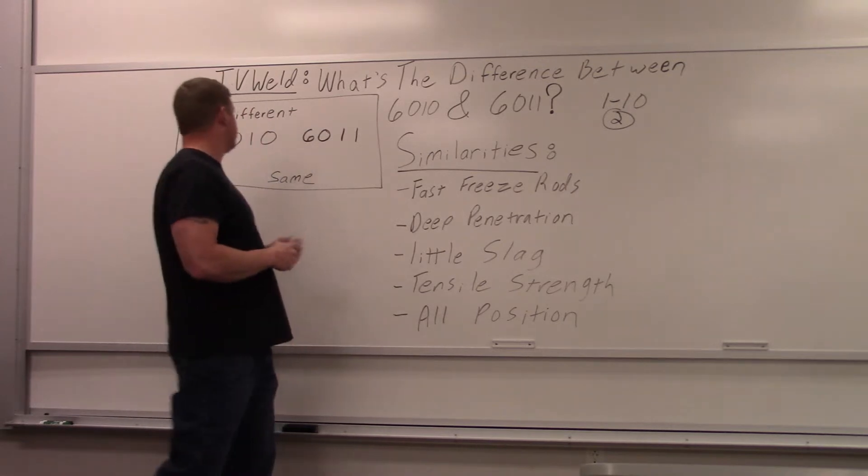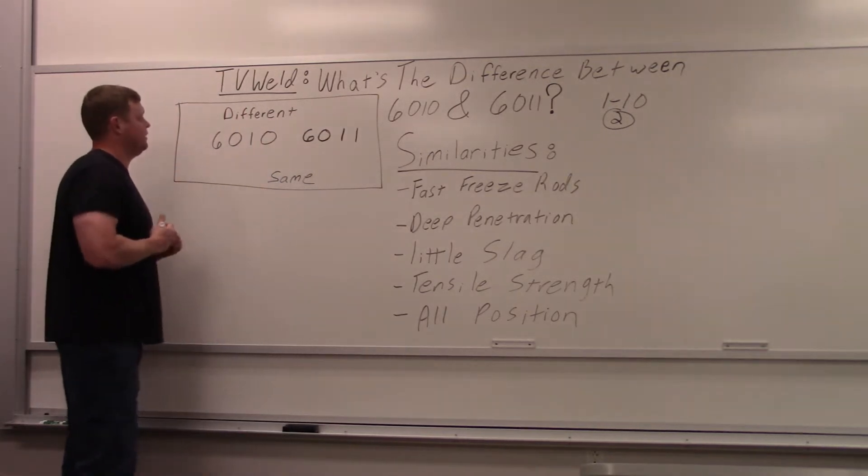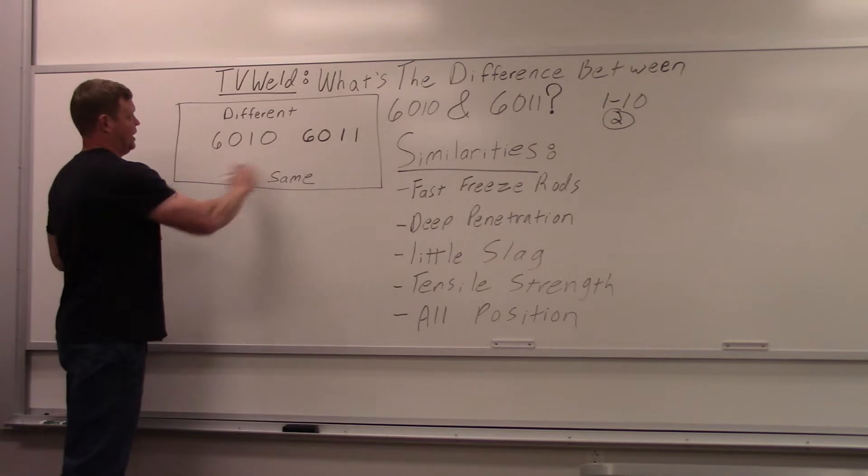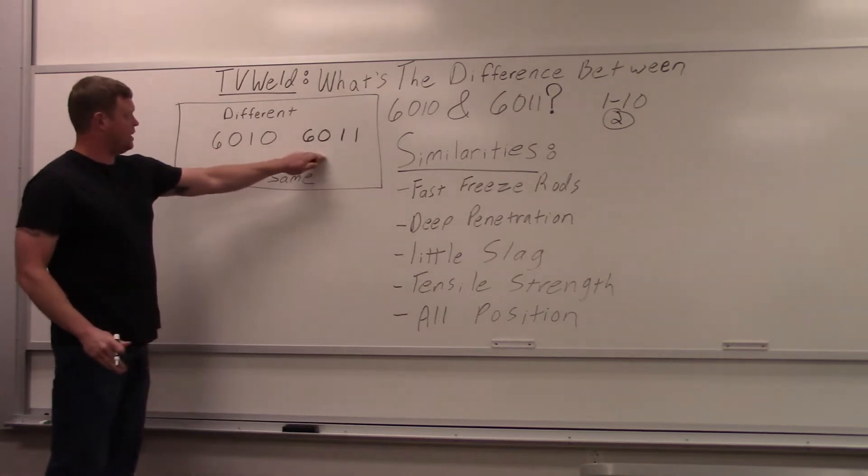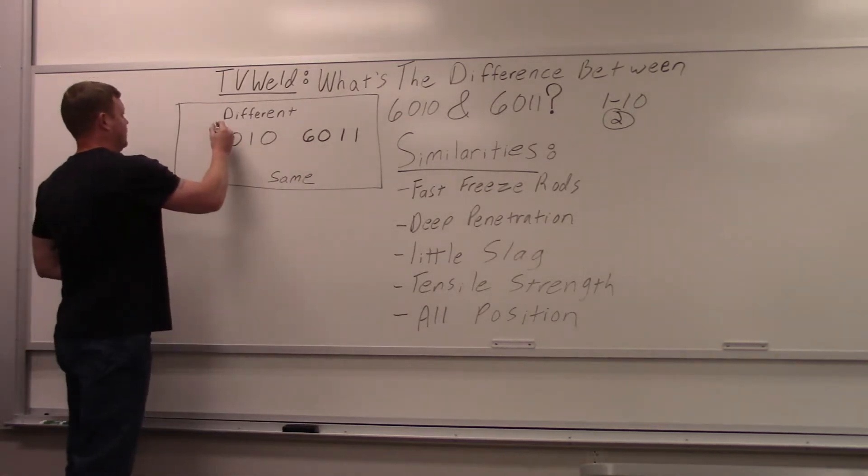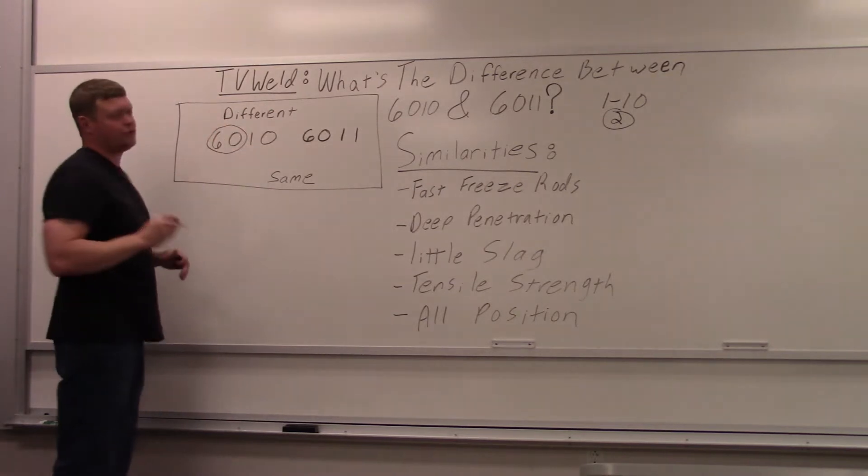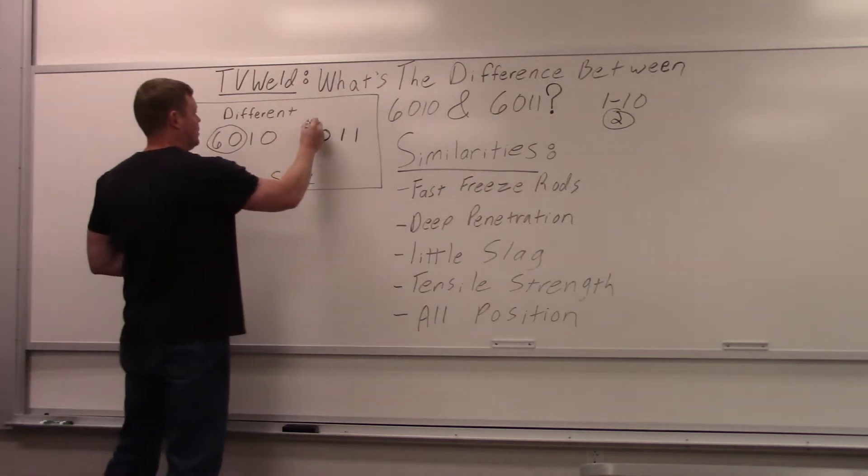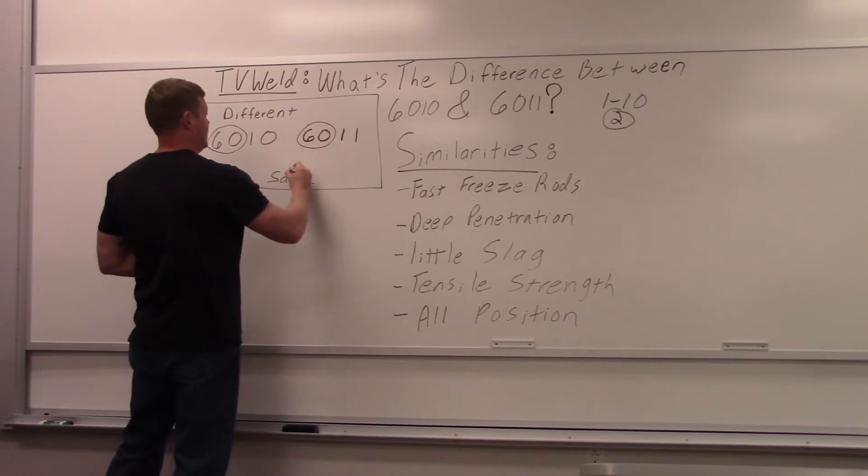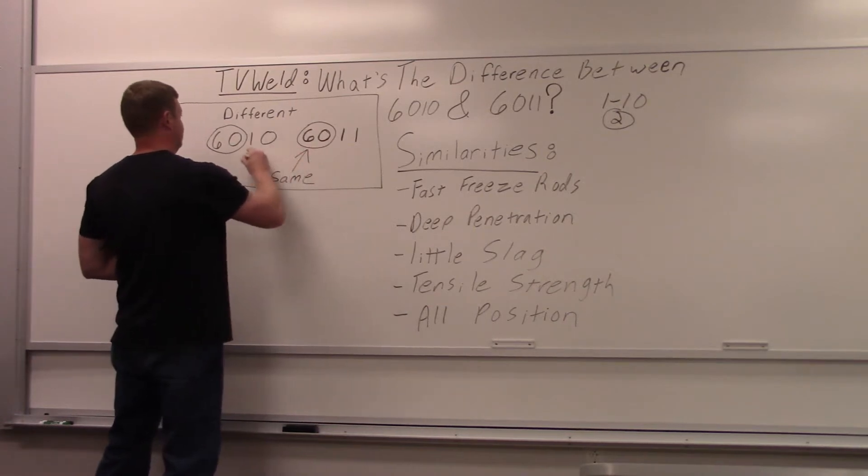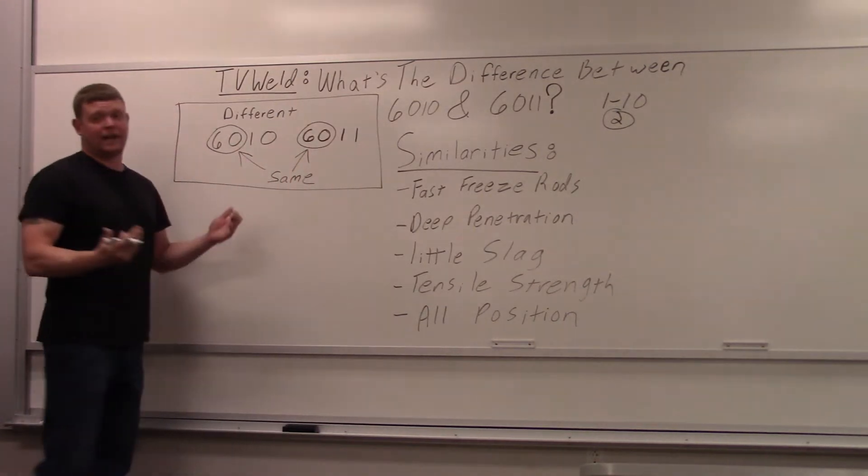Now, the obvious differences I got written here, different, the same, right? So if you're looking at the designation, the first two letters, I'll do a circle around them, or letters, the first two numbers, rather, are 60. That's the same, right? On both. So it can't be that, right?